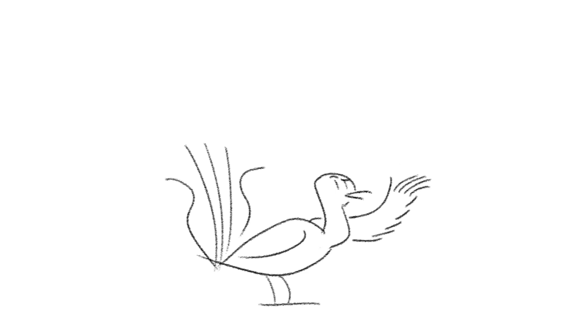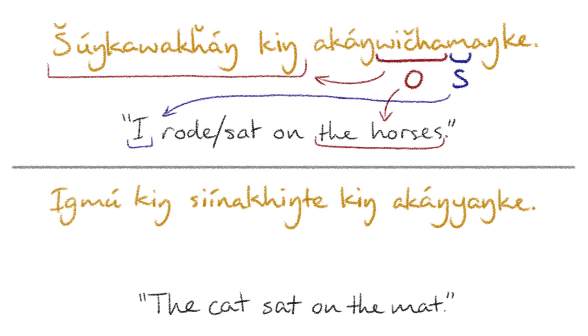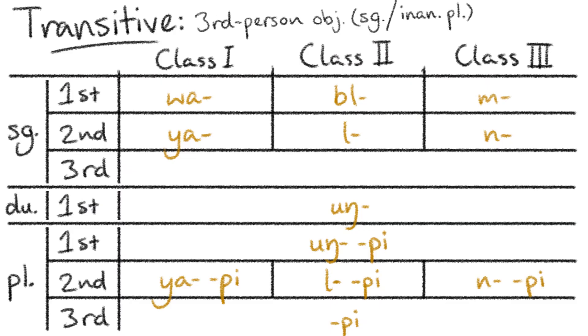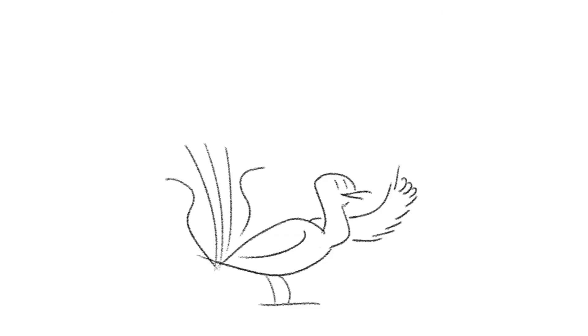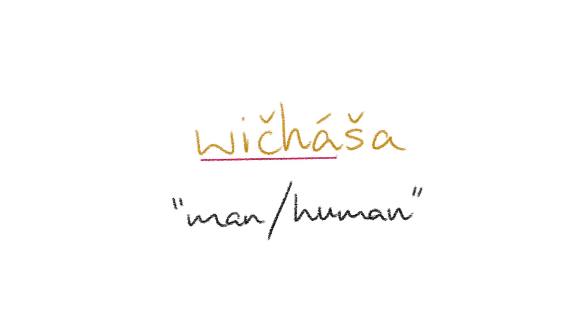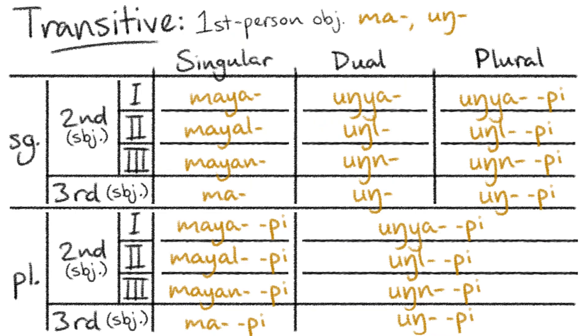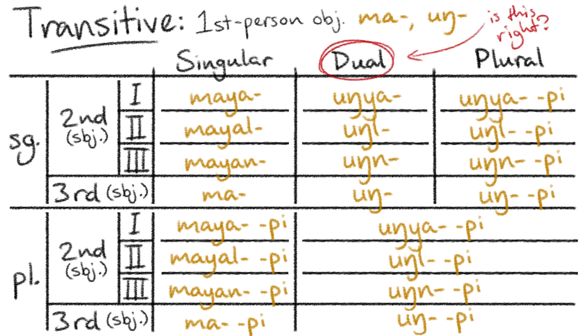Transitive verb conjugation is a little easier to pick up on, but still a little complicated, as it follows a more or less OSV structure in complete defiance of the standard SOV word order. For third-person objects, the conjugation is largely the same as intransitive verbs, expressed through a null morpheme again, except for animate plural objects, where the subject is preceded by the affix wichha. Wichha is taken from the word for man or human, which must mean, at least according to Lakota verb conjugation, that animals are people too. First-person objects maintain the same form regardless of verb class, though I'm not exactly sure if a distinction is made between dual and plural objects in this case.